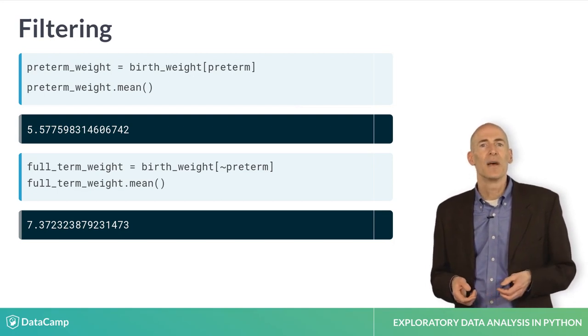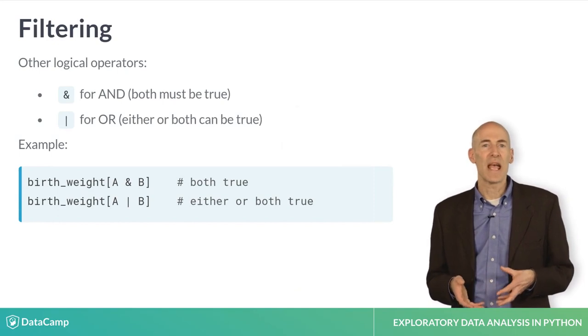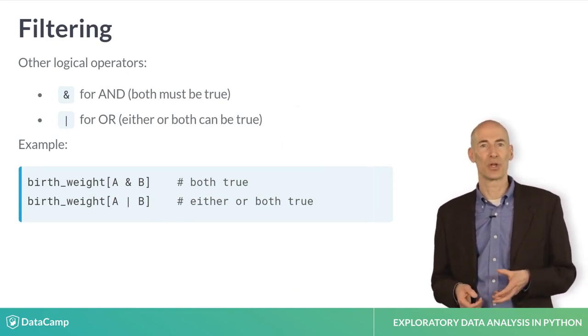If you have two Boolean series, you can use logical operators to combine them. Ampersand is the logical AND operator, and the vertical bar, or pipe, is logical OR.